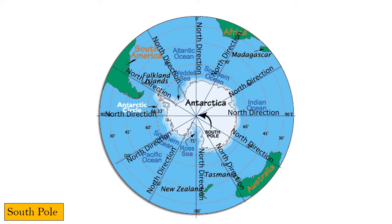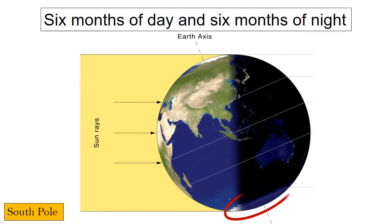Most importantly, from the South Pole, all directions are North, just like the North Pole. The South Pole doesn't have sunrises and sunsets every day because the earth is tilted on its axis by approximately 23.5 degrees, so at the poles the sun rises and sets only once a year.